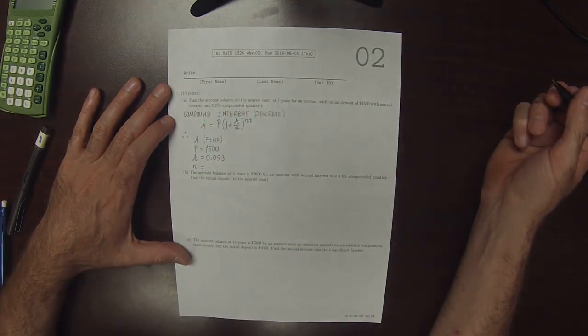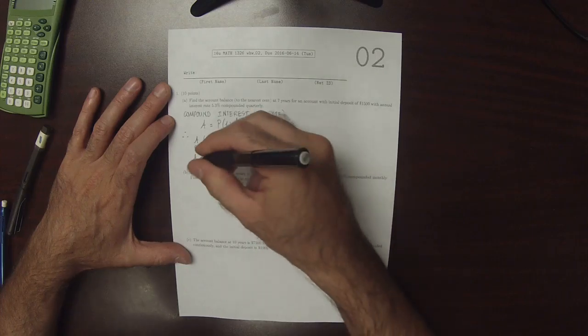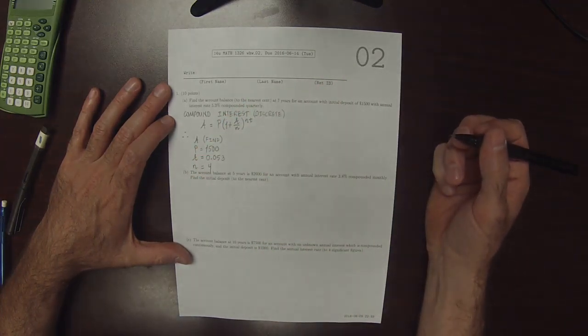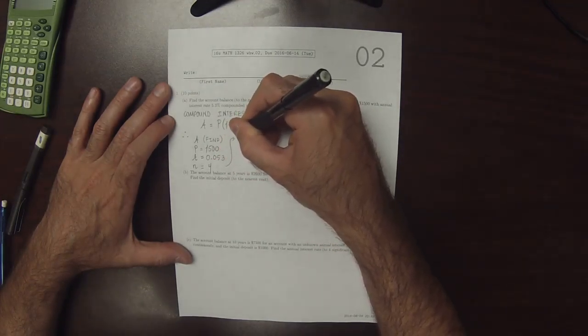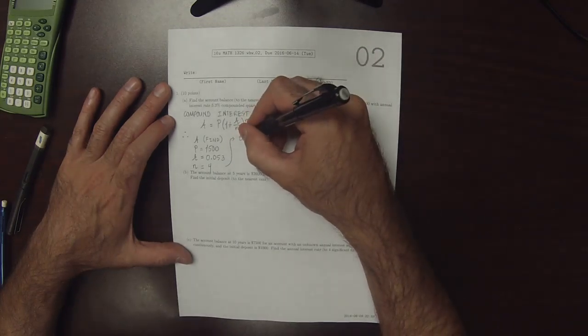N is the number of compoundings per period. It says compounded quarterly, so that means n is 4, the number of compoundings per period. And t, the number of periods, is 7, 7 years.